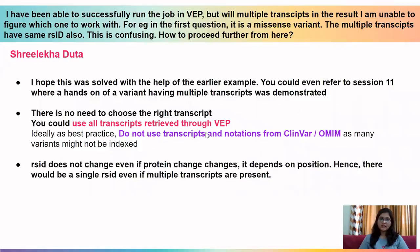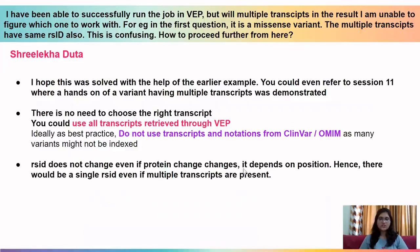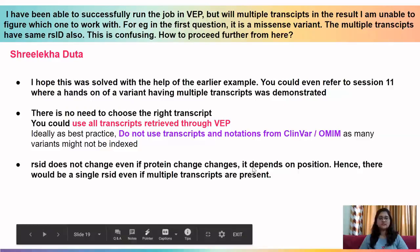The next question is by Shree Lekha. She ran VEP successfully but with multiple transcripts cannot figure out which to work with — the multiple transcripts also have the same RSID. I hope this was solved by the example demonstrated earlier. Refer also to session 11 for hands-on annotation with multiple transcripts. Use all transcripts given out by VEP without missing any. The RSID does not change as the protein changes — it depends on position, so all transcripts at the same position will have the same RSID.